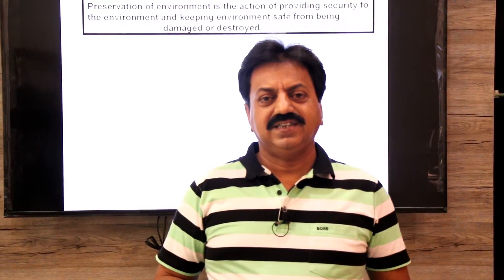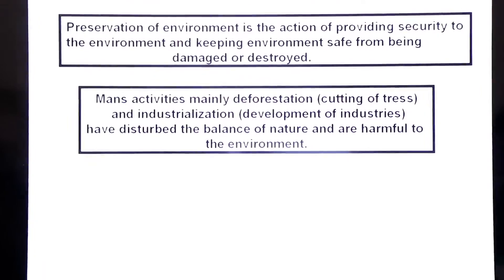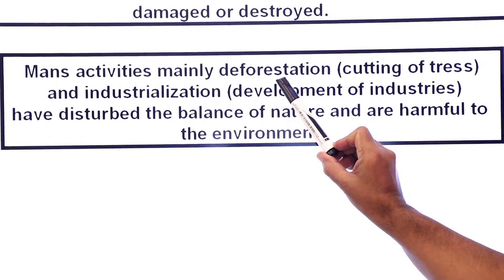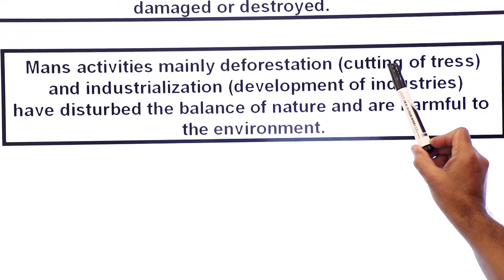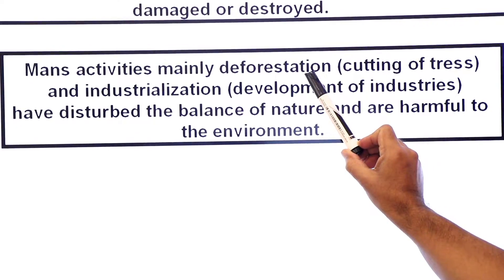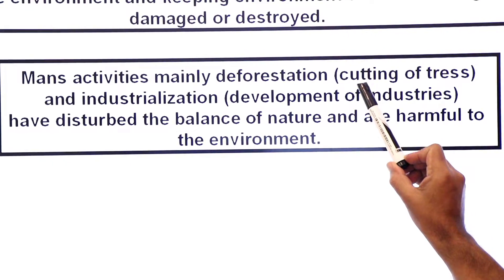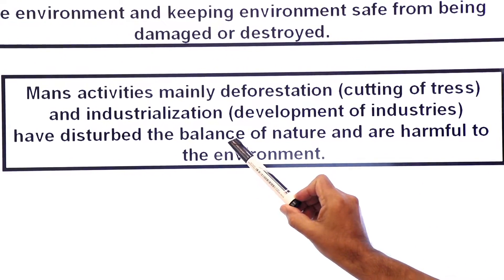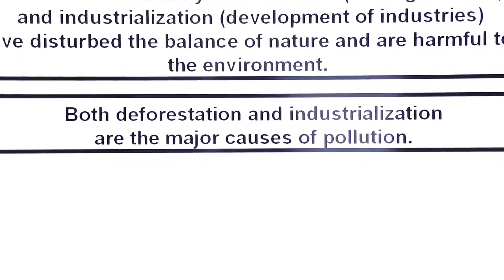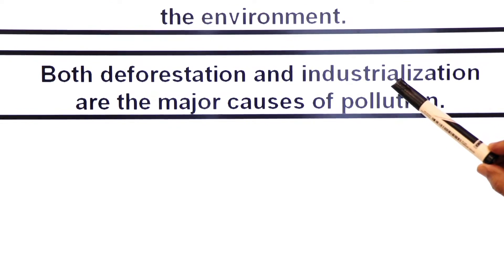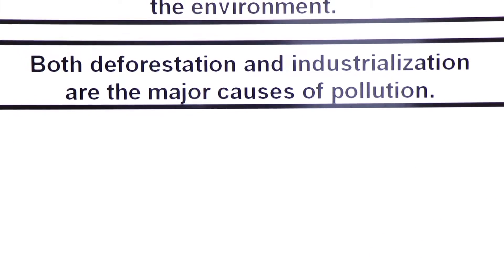Dear students, pollution is the big threat to our environment. The main activities — mainly deforestation, which means cutting of trees, and industrialization, which means development of industries — are the two main causes of pollution. These have disrupted the balance of nature and are harmful to the environment.